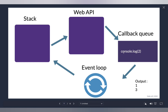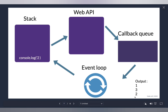The event loop sees: the stack is empty, and there is a callback — `console.log(2)` — that needs to get executed. So it pushes it onto the stack. Now `console.log(2)` gets executed, and we finally print the output as 1, 3, and 2. That's what is happening behind the scenes. Once executed, it gets popped off the stack.